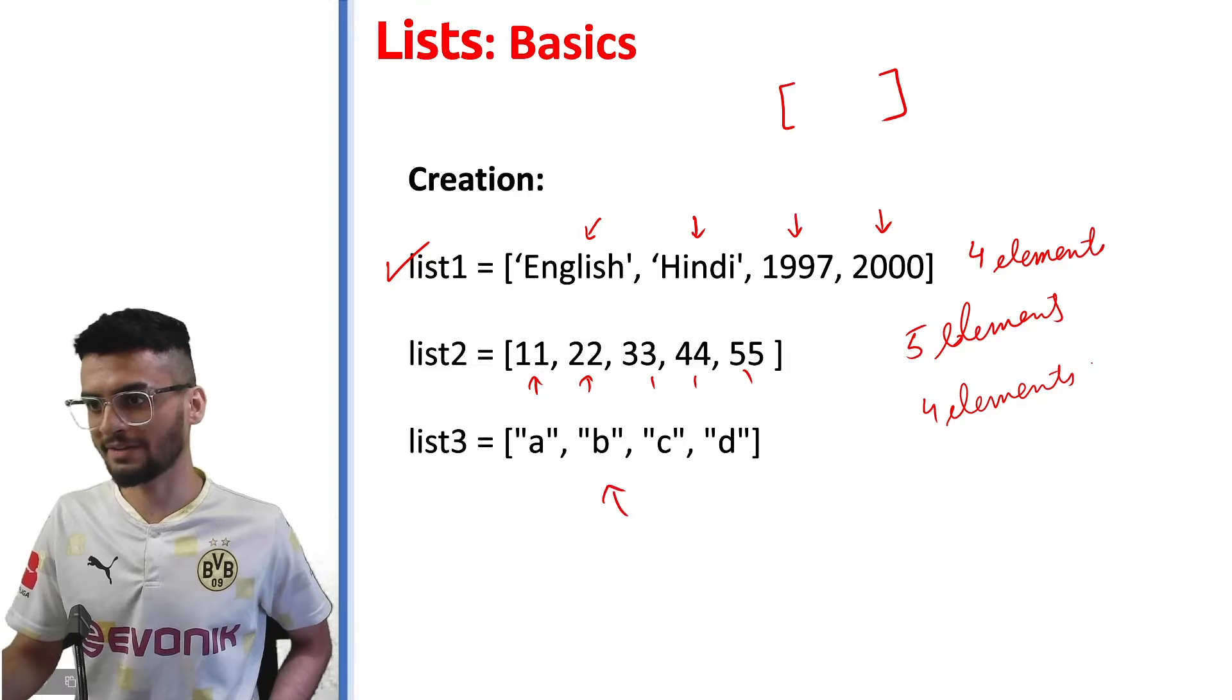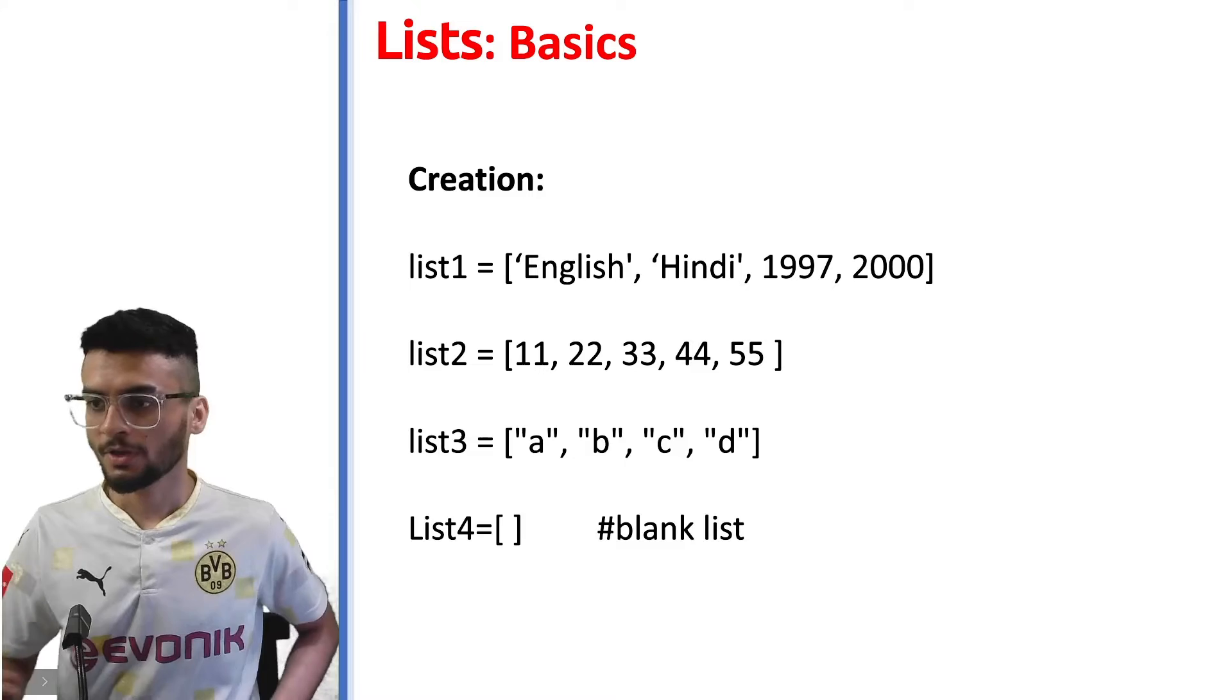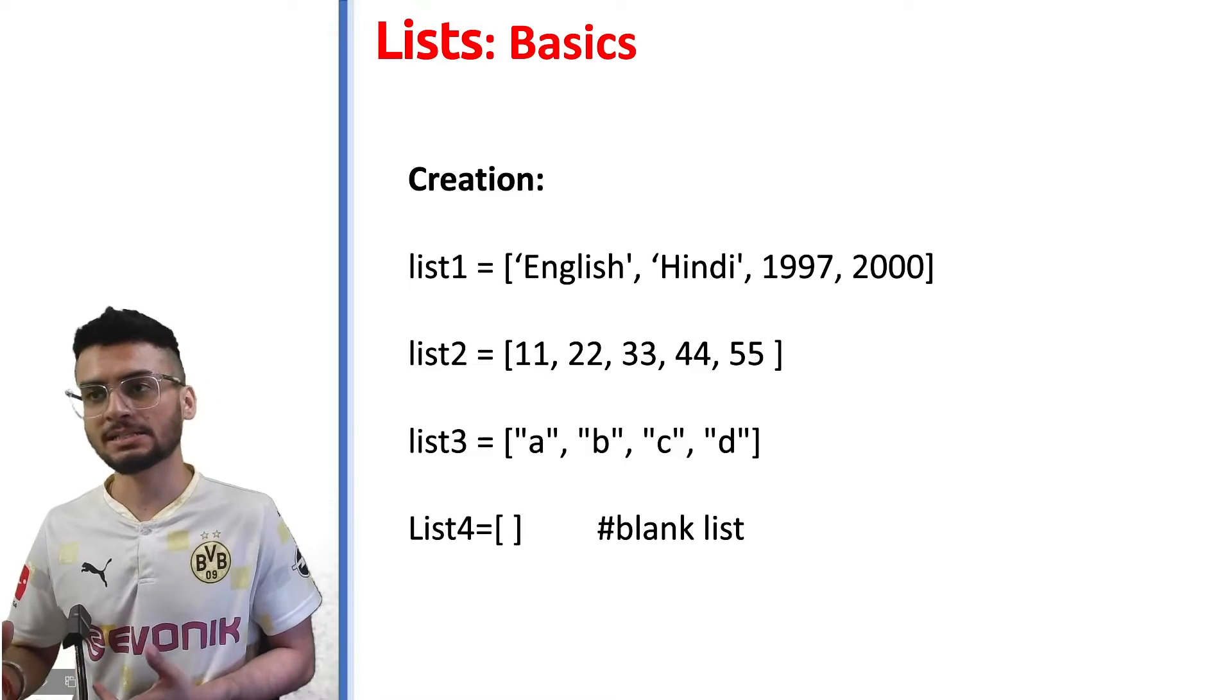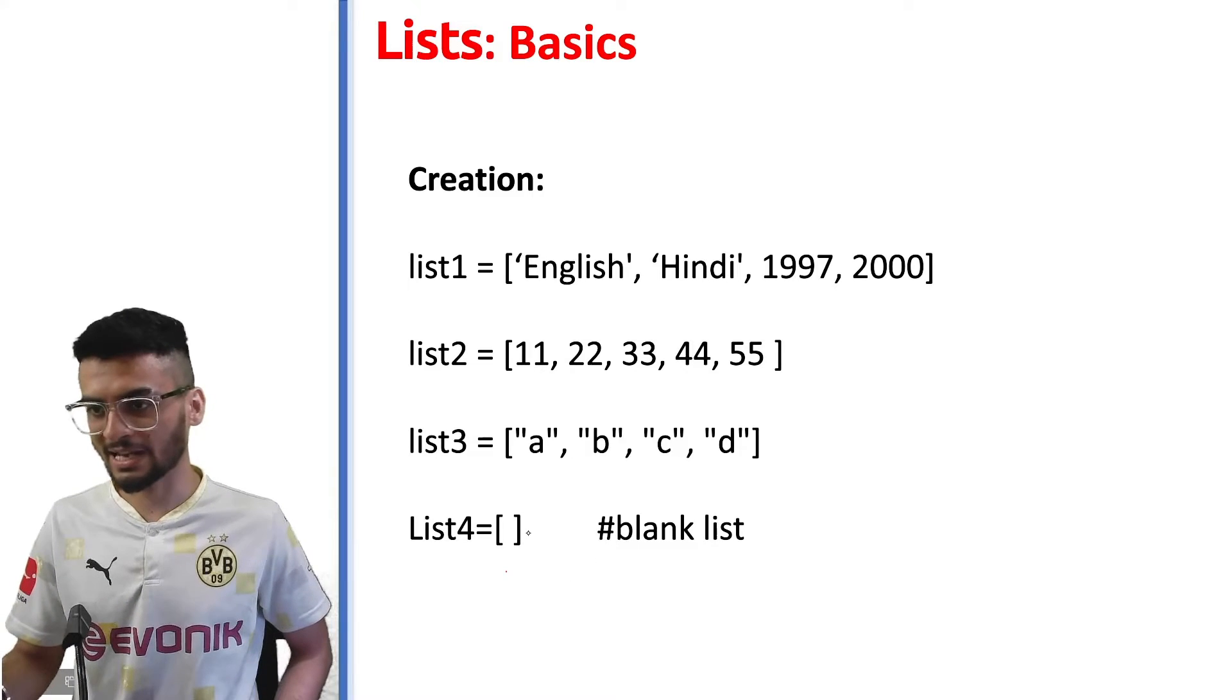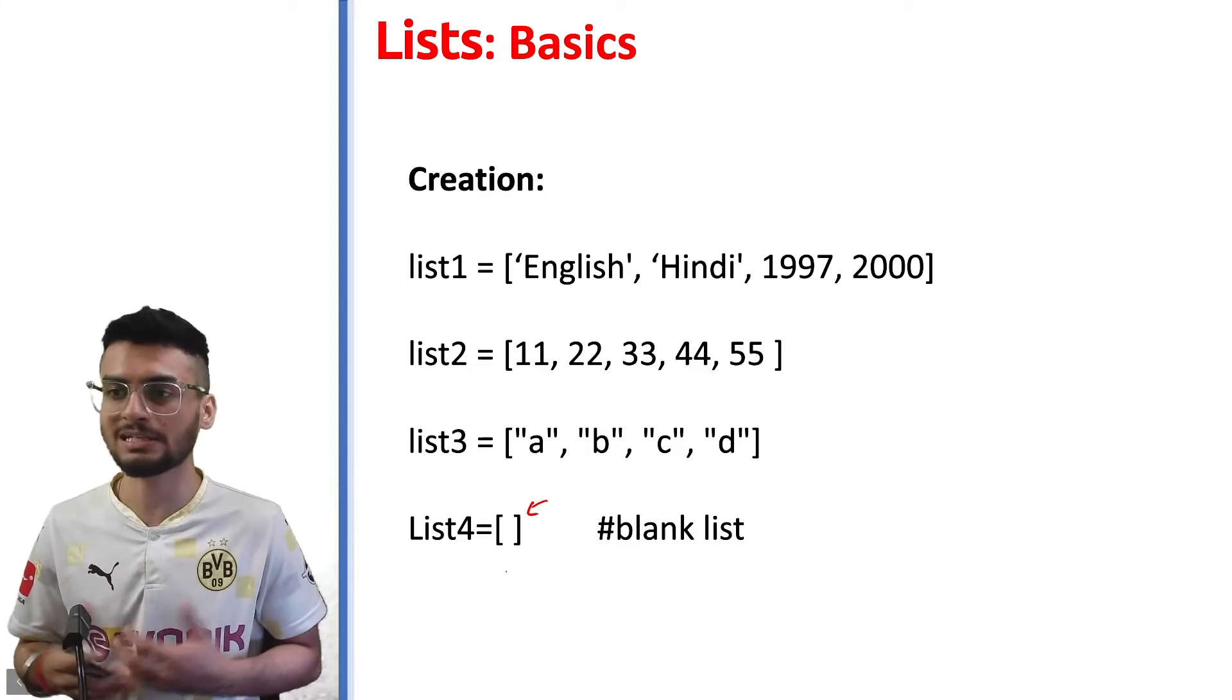And over here everything is a string or character data type. You can also create a blank list by just having two square brackets, which means the list is empty.